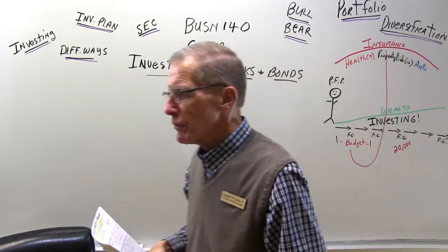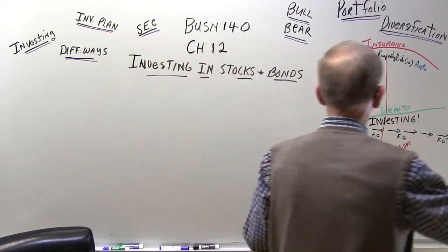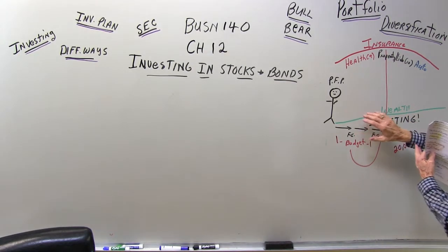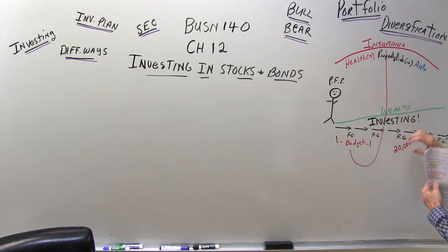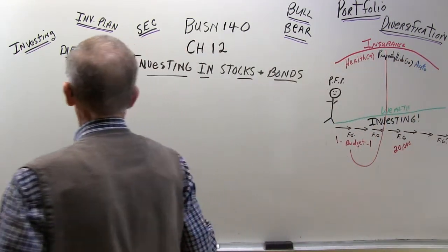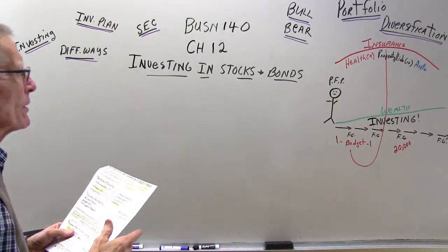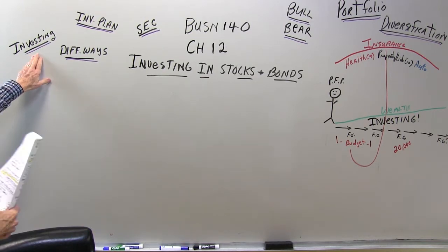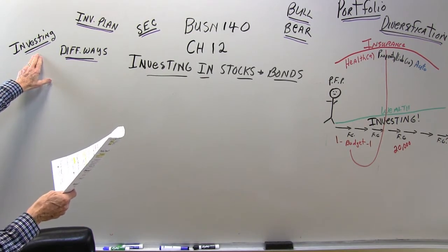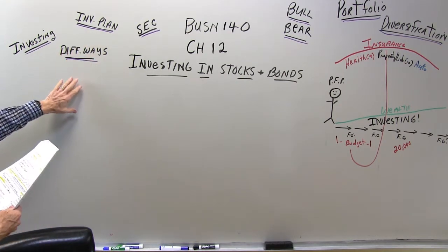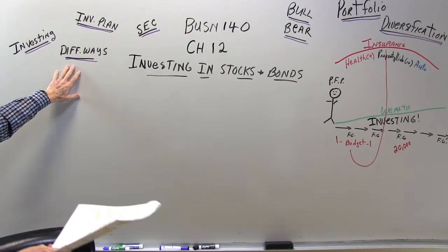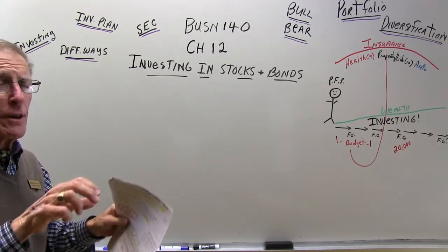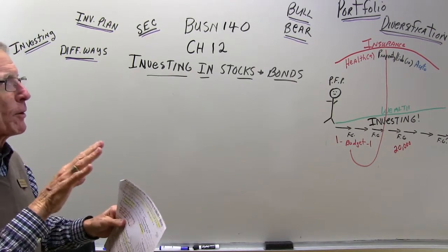Chapter 11 is the first chapter on investing, and I put this on our timeline and wealth line because a lot of the ways you can increase your wealth is through investing. Remember we're investing as personal financial planners — we're not speculating. We should have a written investment plan. There are different ways to invest: mutual funds, stocks, bonds, or CDs and savings accounts, although those have very low rates of return.